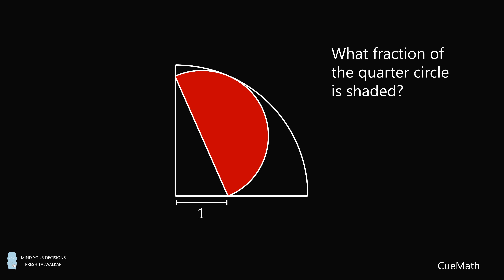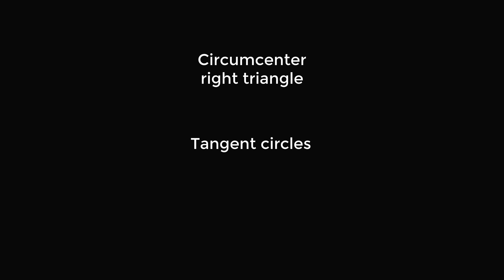I saw this interesting problem on QMath. Pause the video if you'd like to give this problem a try, and when you're ready, keep watching to learn how to solve this problem. So how can we solve this problem? To get started, I'm going to review two important concepts. The first is the circumcenter of a right triangle, and the second has to do with tangent circles. So let's get started with the circumcenter of a right triangle.